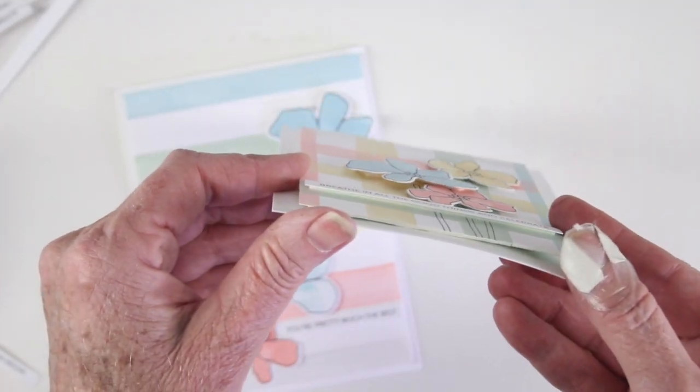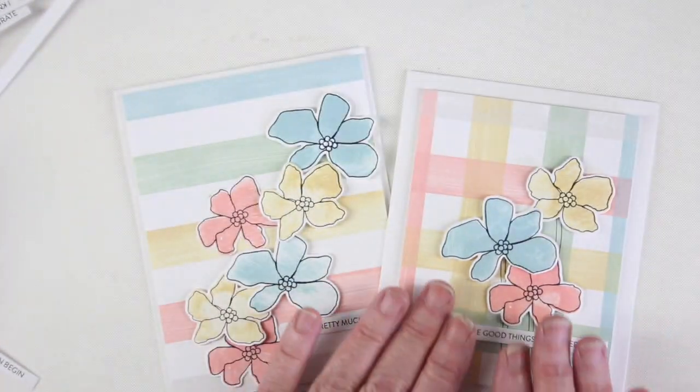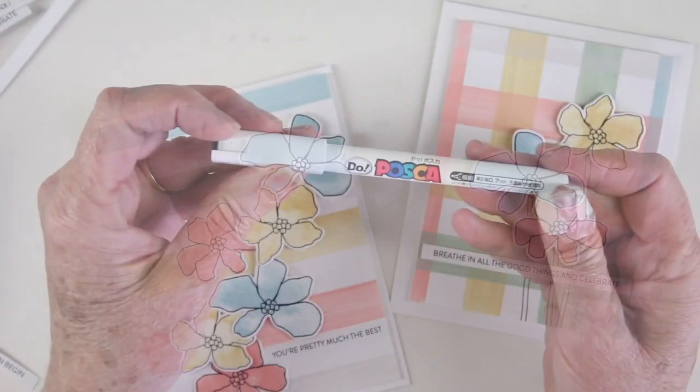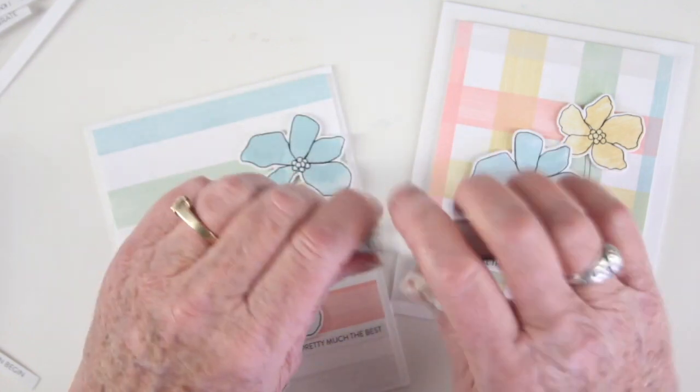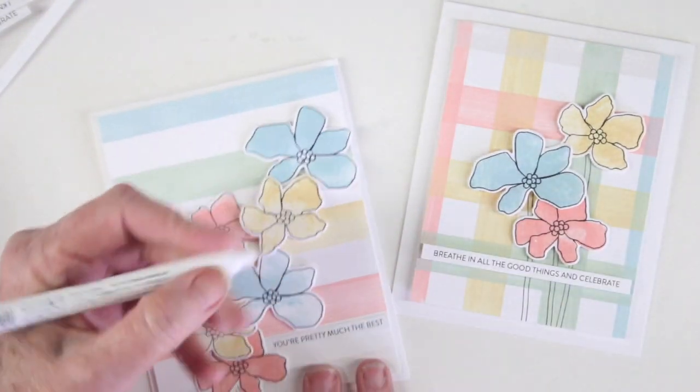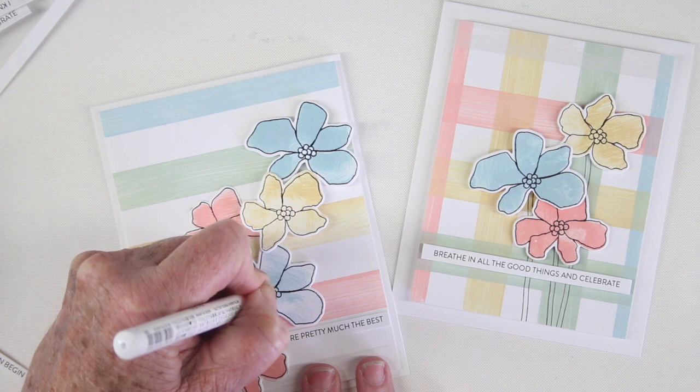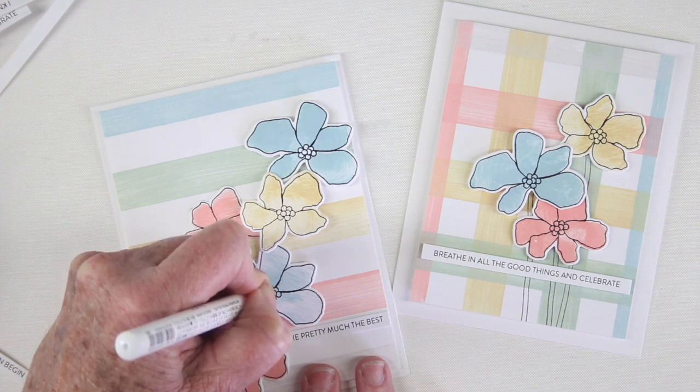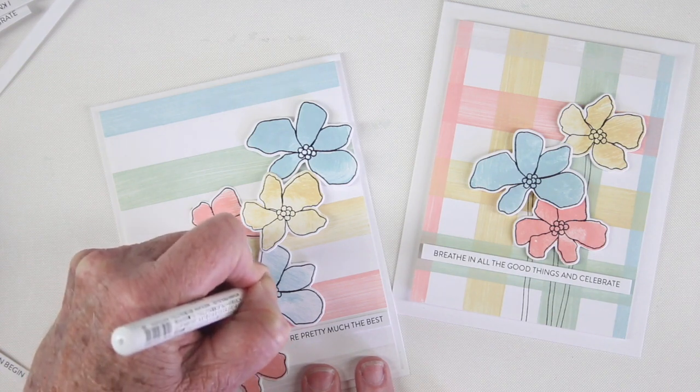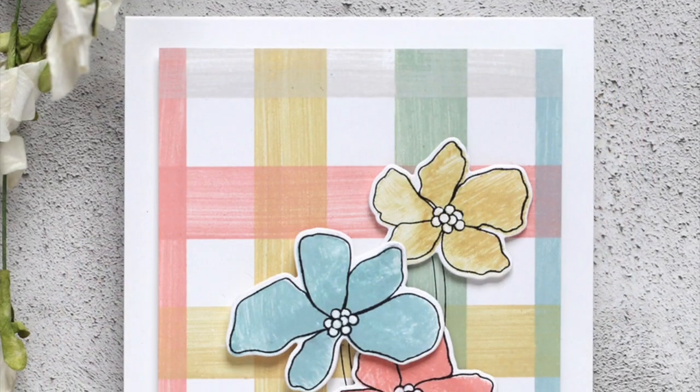This is a super simple card to make. For my second card I've used a little bit of foam tape and I have lifted that sentiment up for a bit of dimension. I am using a white pen and I'll be adding this to the centers of each of those flowers. You could use nouveau drops or any type of colored pen to fill in those little dots.